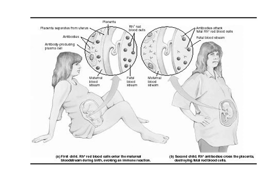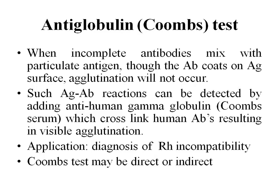During the second pregnancy, the IgG anti-RH antibodies cross the placenta and affect the baby, leading to erythroblastosis fetalis. So to diagnose whether the maternal serum has anti-RH antibodies, or whether the baby is already suffering from RH incompatibility, we are going to do a test called the anti-globulin test, or Coombs test.